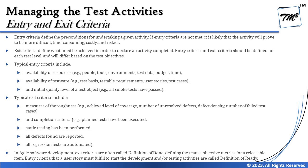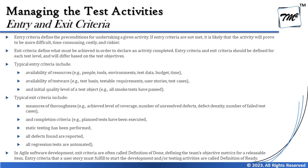Completion criteria include whether planned tests have been executed, how many are pending, whether static testing has been performed, and whether all defects found have been reported. You cannot always ensure all defects are resolved — sometimes there is a tolerance on defect closure — but at minimum they must be documented so none remain only on a verbal note. Also, regression tests being automated is a typical completion criterion, as automation is often a deliverable to the business at project end. Remember, not every single point will apply to every project — you must analyze your own project objectives to determine your precise entry and exit criteria.